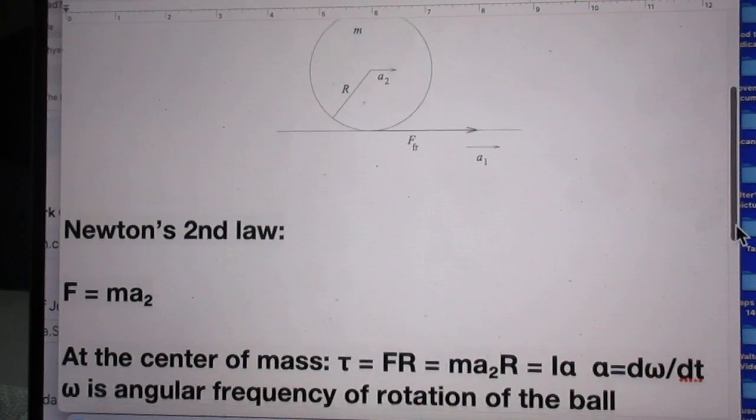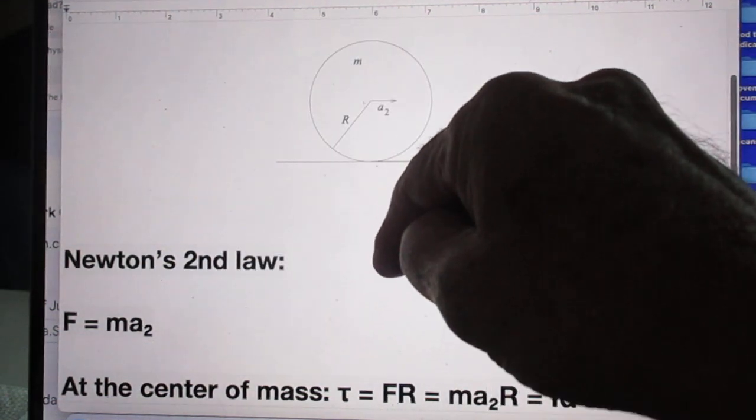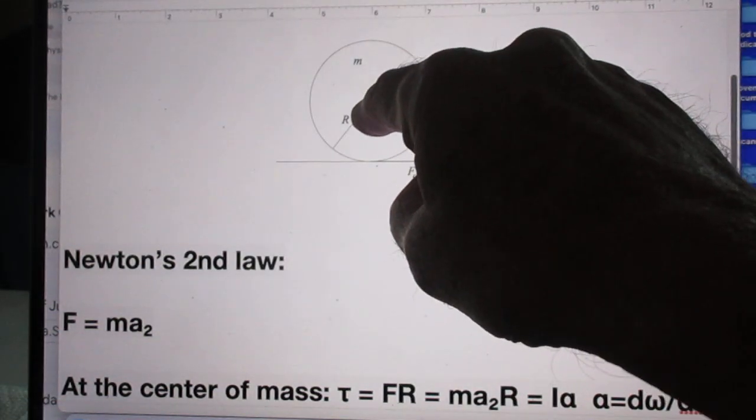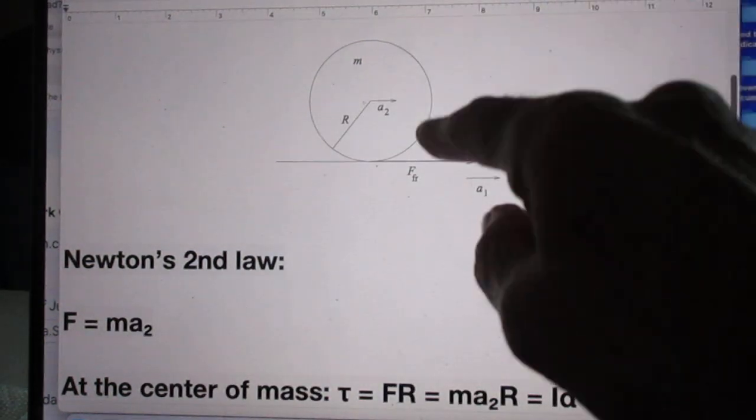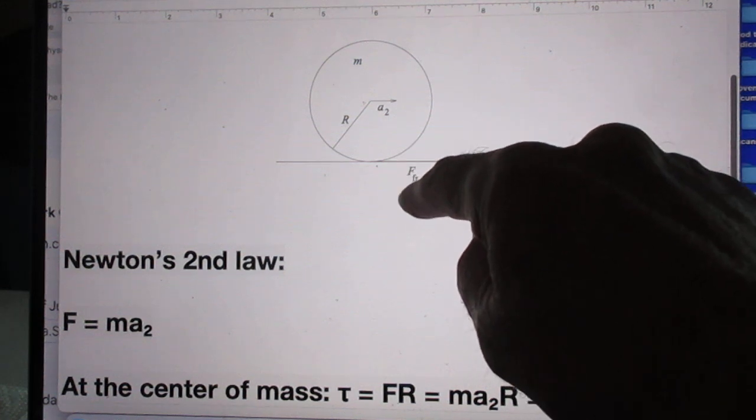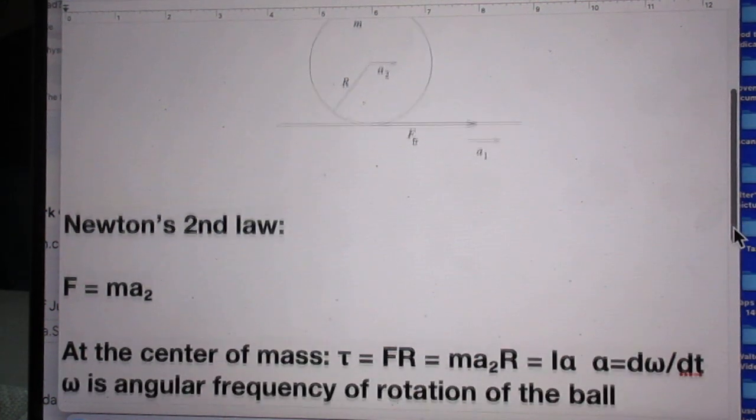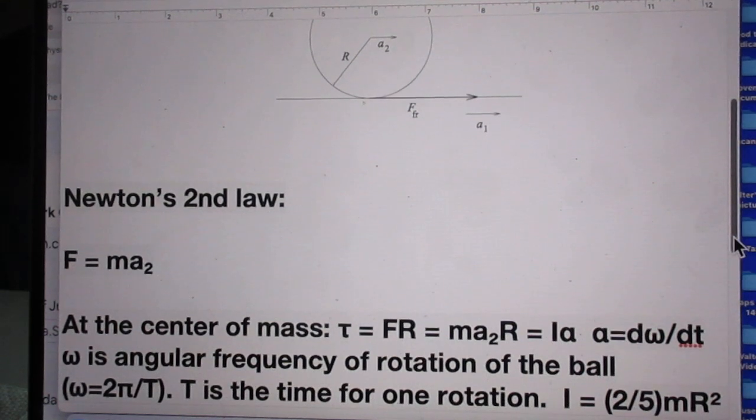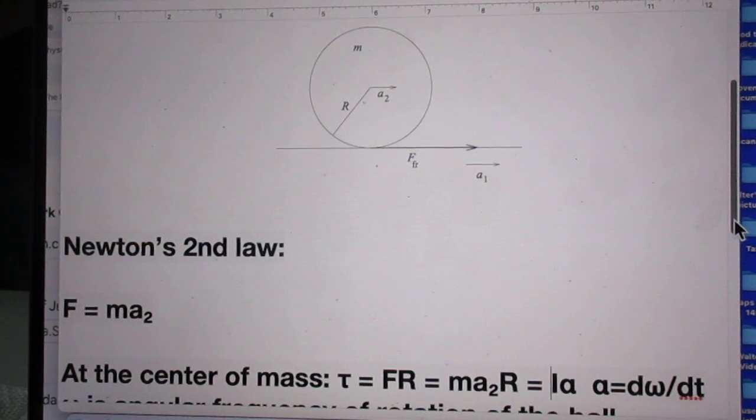Okay, Newton's second law, F equals MA2. Right? I'm standing here, this ball is moving away from me with acceleration A2. So F, which is this F, is MA2.